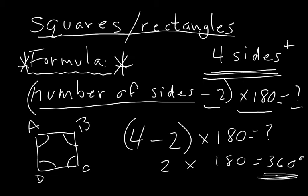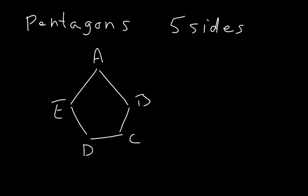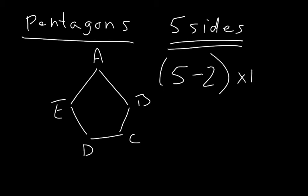In this one we're looking at pentagons—they have five sides. I've drawn a rough pentagon here, and we're going to apply the formula. So the first thing I have to write down is how many sides. I have five sides, subtract 2, multiplied by 180.